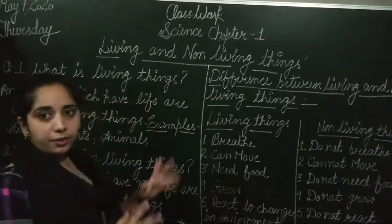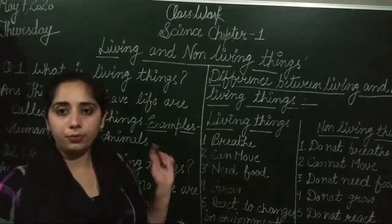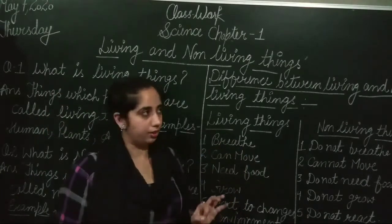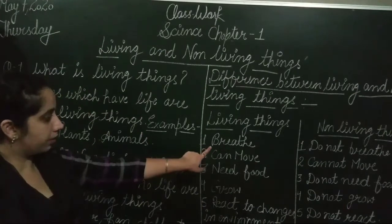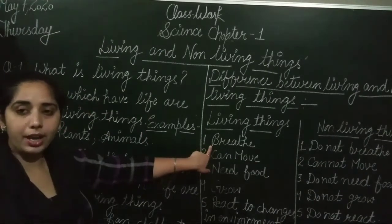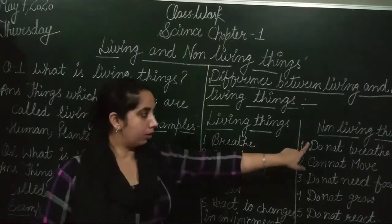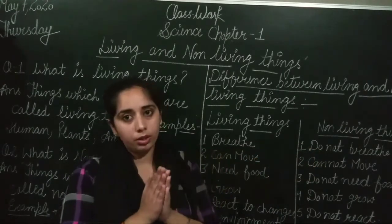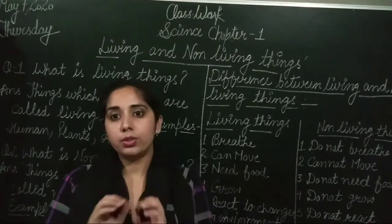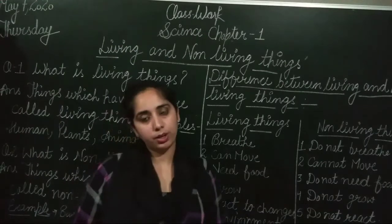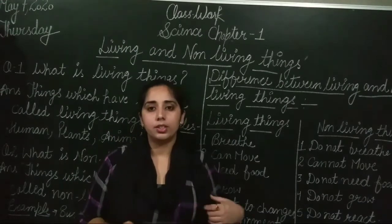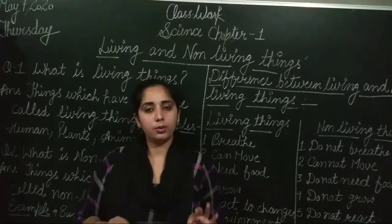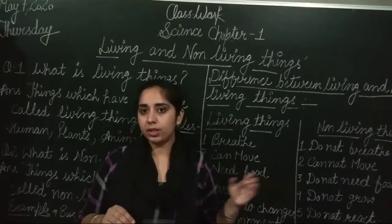These are the definitions. Now we will do the difference between living and non-living things. The first difference is breathing. Living things can breathe and non-living things cannot breathe. For example, the fan is non-living and cannot breathe.